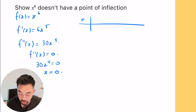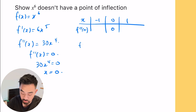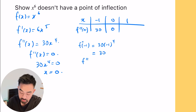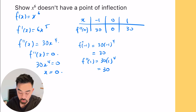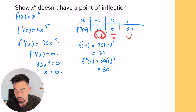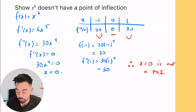We put zero into our table and choose numbers on either side. f double dash of negative one is 30 times negative one to the power of four. Negative one to an even power is positive, so that's 30. f double dash of one is also 30. Both values are greater than zero, meaning concave up on both sides. Because there is no change in concavity, x equals zero is not a point of inflection.